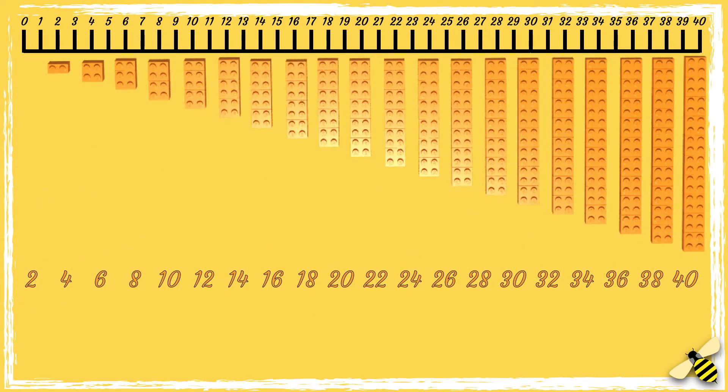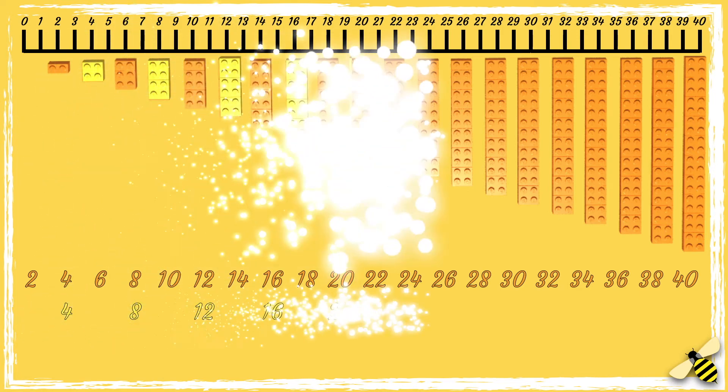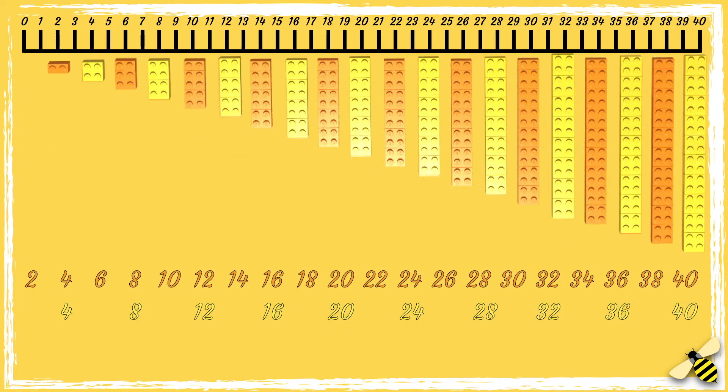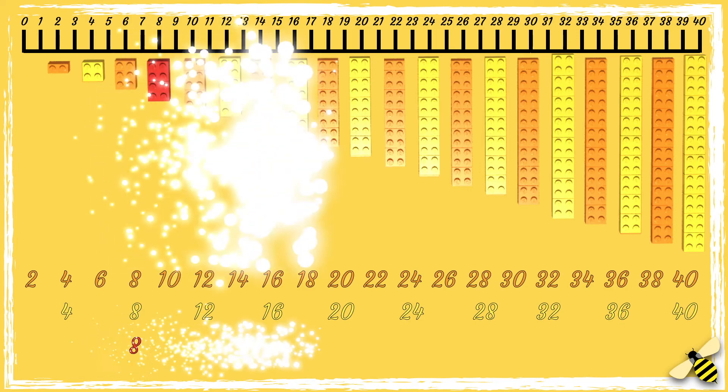And remember, when you count in 4s, you count every second number in the 2x table and when you count in 8s, you count every second number in the 4x table.